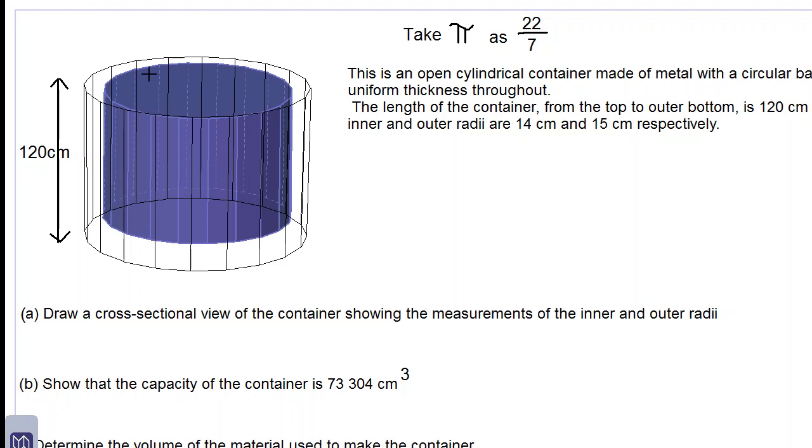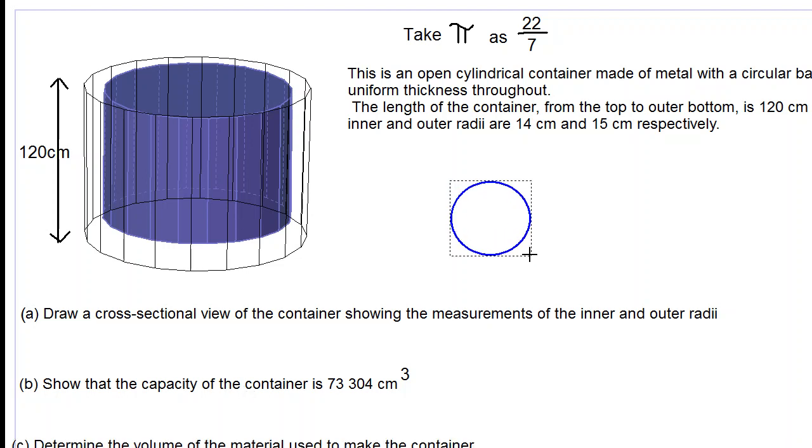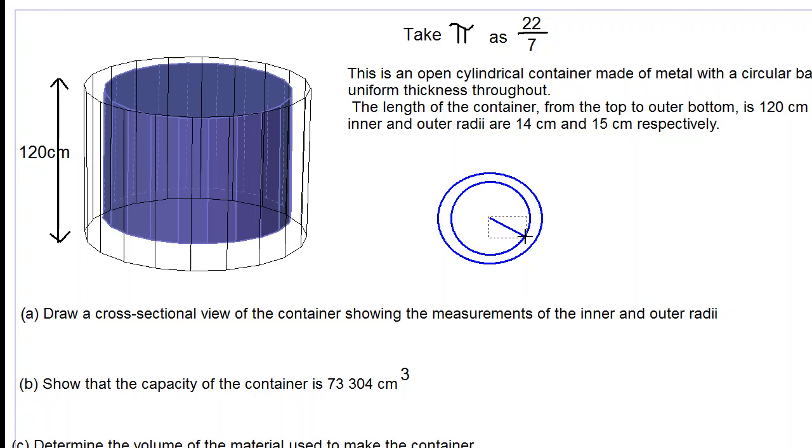If we do that, we will see two circles, one on the inside and one on the outside. So let's do that diagram. We have our circle on the inside and we have our circle on the outside. And the inner radius will be 14 cm. This is what the cross-sectional view would look like.